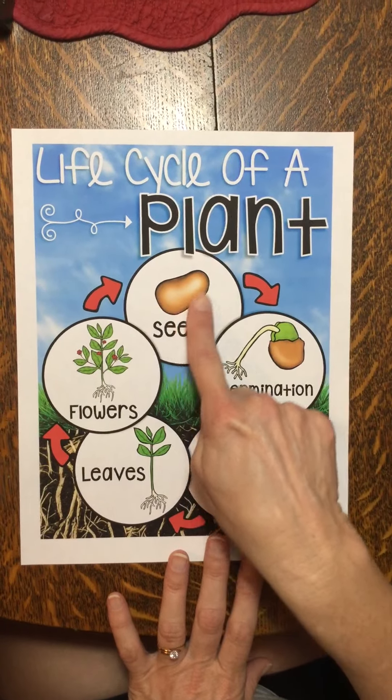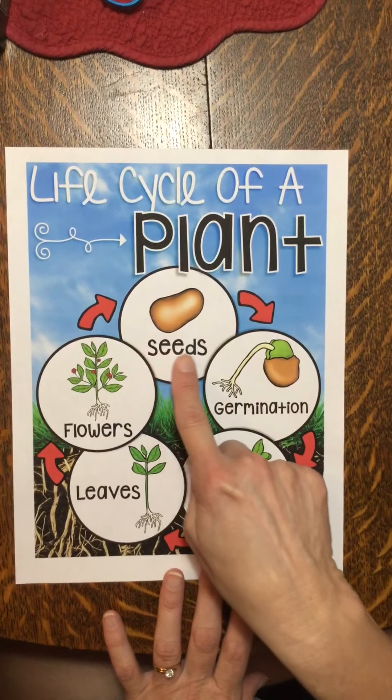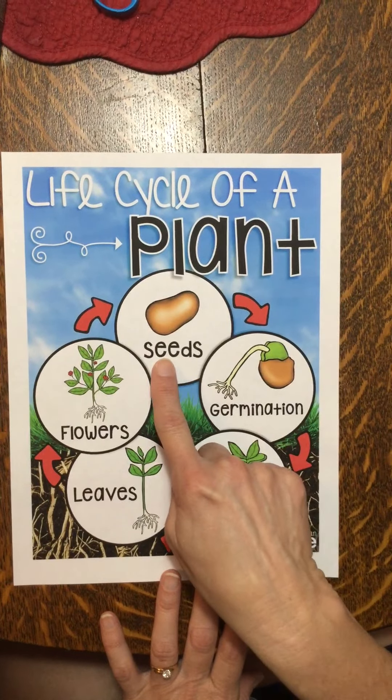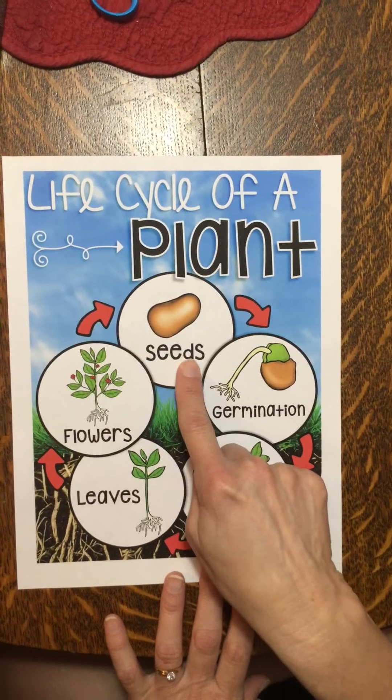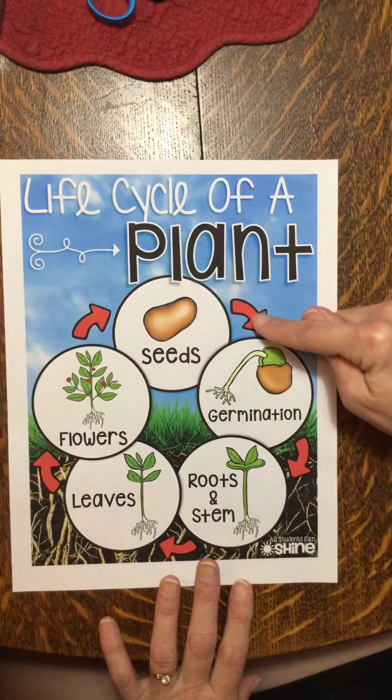We're going to start right up here where we see the picture of the seed. A plant starts out as a seed, and let's follow the arrow.